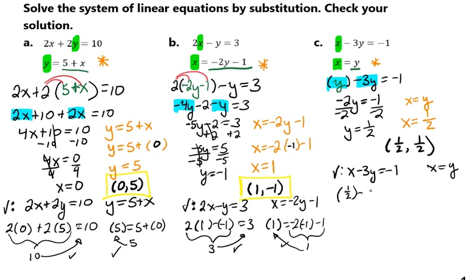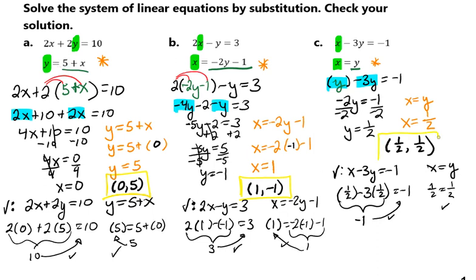Now we plug in 1/2 minus 3 times 1/2 to see if we get negative 1. That gives us 1/2 minus 3/2, which is negative 1 — so that works. Over here we plug in our 1/2 and 1/2, and that works too. So we have the solution (1/2, 1/2) for that system. That's how you solve a system of linear equations using substitution.